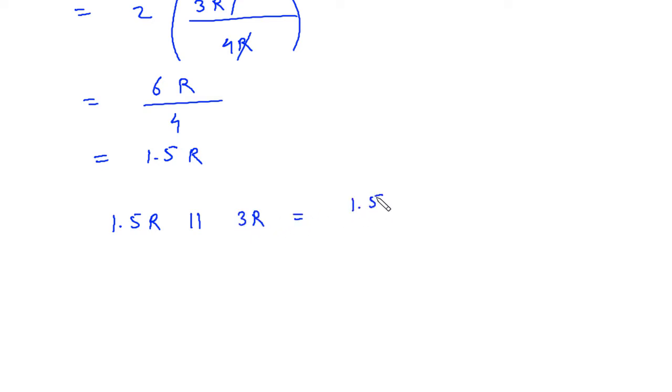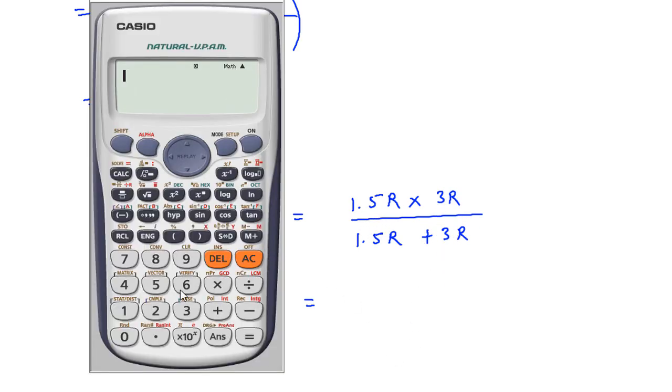This will be 1.5R into 3R divided by 1.5R plus 3R. This will be 1.5R.